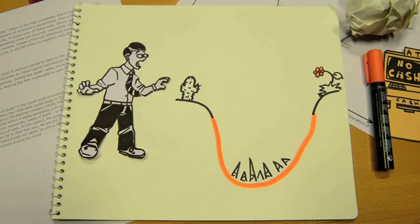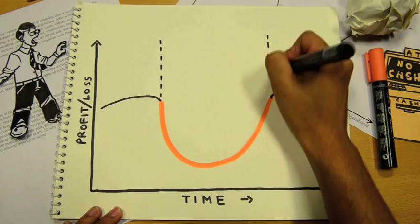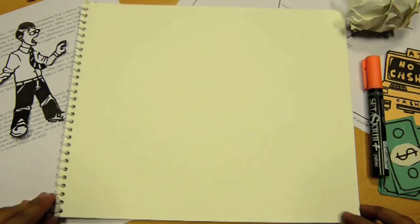If drawn out, the death valley curve forms a U-shape where profits drop immediately after funding due to added expenses. The company will remain at the bottom of the U until it finds new investors or earns revenue.